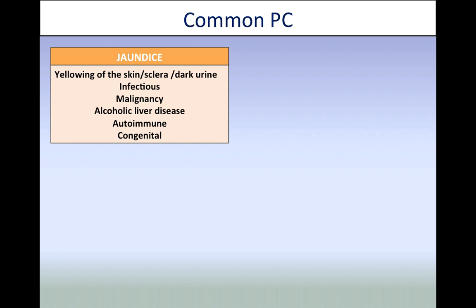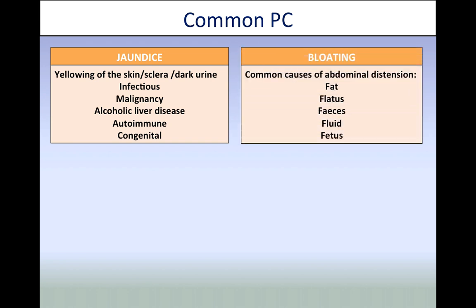Patients tend to complain of jaundice — that is, yellowing of the skin — which has multiple causes from prehepatic, hepatic to posthepatic. Some causes include infections such as hepatitis B, alcoholic liver disease, and malignancies such as pancreatic cancer. Taking a thorough history will help you distinguish which is more likely. Bloating is another complaint. I always think of the five F's when thinking about bloating: fat, fetus, flatus, fluid, and faeces.